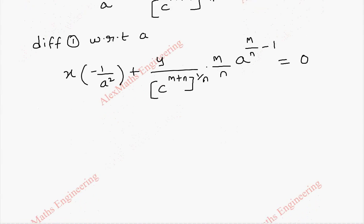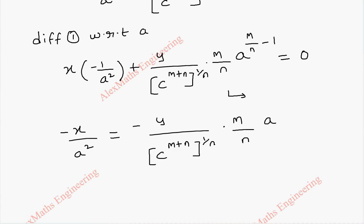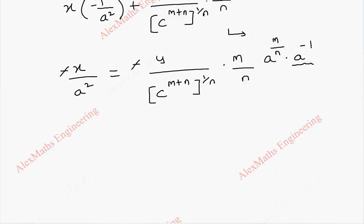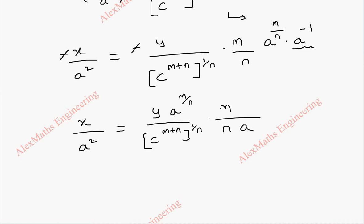Now we are going to take this to the other side: -x/a² equals -y / c^((m+n)/n) · (m/n) · a^(m/n - 1). The a^(m/n) term can be split into a^(m/n) · a^(-1), so we can cancel these two, and this can be written as 1/a. So it is x/a² = y / [c^((m+n)/n)] · a^(m/n) · (m/n) · (1/a).